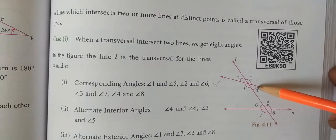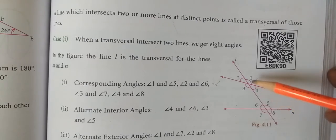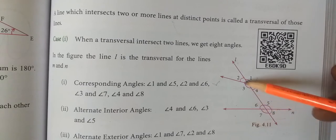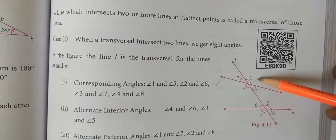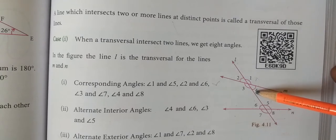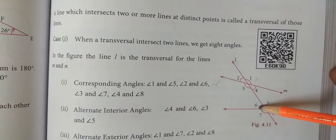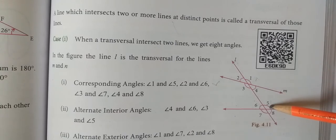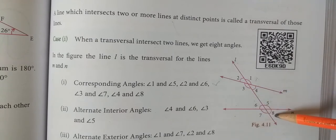Angle one is above the line and angle five is also above the line — this is one set of corresponding angles. Similarly, two and six: two is above the line and six is above the straight line. Below the straight line: three and seven are corresponding angles, and four and eight are also corresponding angles.